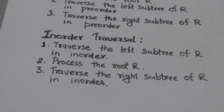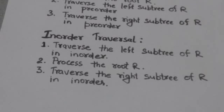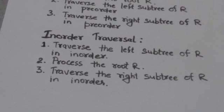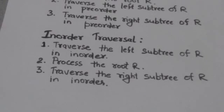In in-order traversal of binary tree T whose root is R, first the left subtree of root R is traversed in in-order, then root R is processed, and after this the right subtree of root R is traversed in in-order.